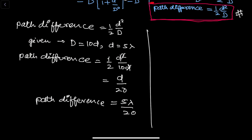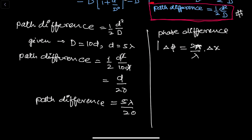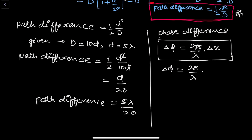Now let's find the phase difference. Children, understand this: phase difference Δφ = (2π/λ) × path difference Δx. Substituting Δx = 5λ/20: Δφ = (2π/λ) × (5λ/20). Lambda cancels with lambda, and simplifying: 2π × 5/20 = π/2. So the phase difference Δφ = π/2.